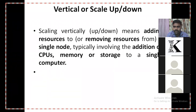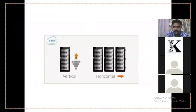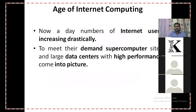Coming to vertical scaling — only one system will be there. If you want to add any resources, you add it to that same system only. For example, if you want to increase the RAM size, we take another RAM and place it inside that CPU only — no need to add another node. Vertical scaling means just adding resources into the existing system. Horizontal scaling means adding new nodes. Clear guys?